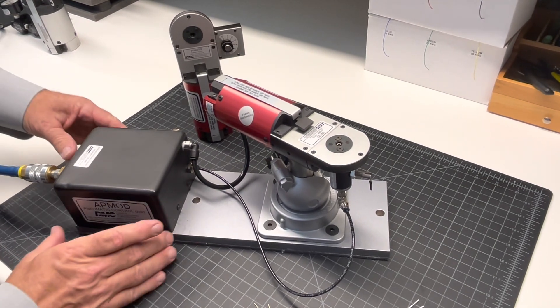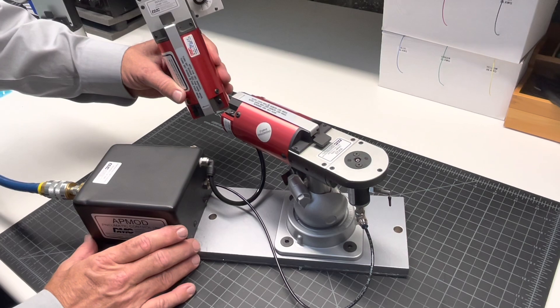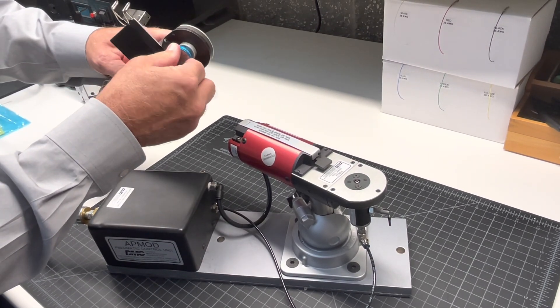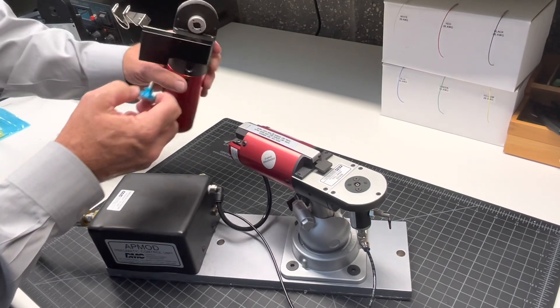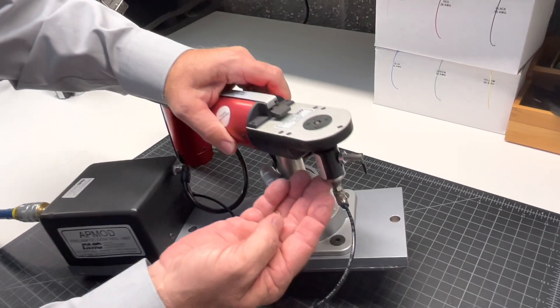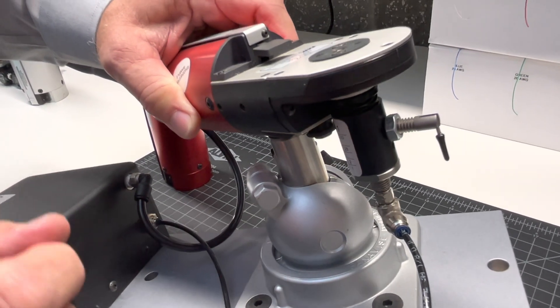The AP mod can be adapted to any of the Daniels pneumatic crimp tools. Instead of using a traditional positioner, what we do with the AP mod is we have what we call a KQA. The KQA is a universal positioner that is set up for one particular contact.